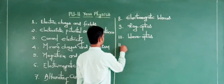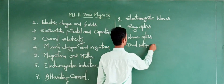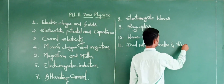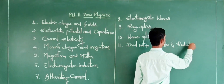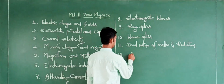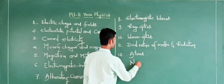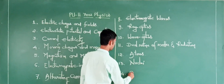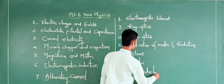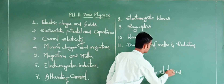Topic number eleven is dual nature of matter and radiation. Topic number twelve is atoms. Topic number thirteen is nuclei. And the last topic, number fourteen, is semiconductor electronics.